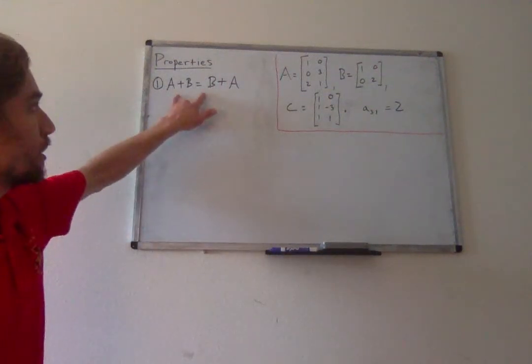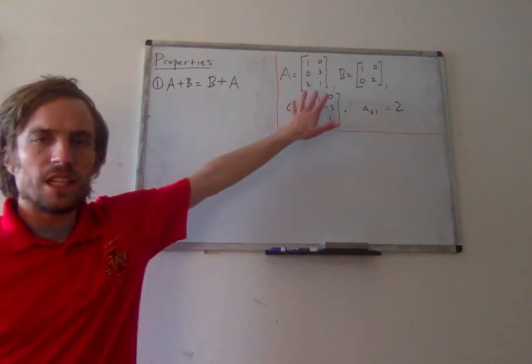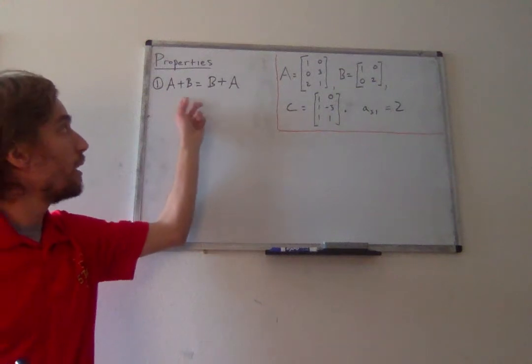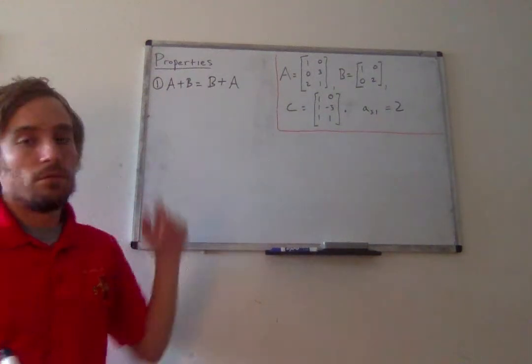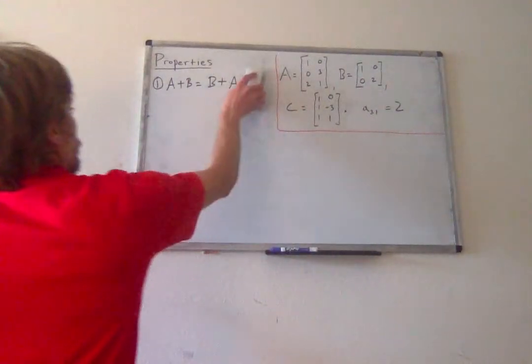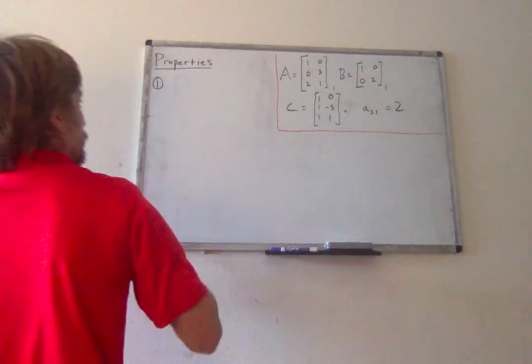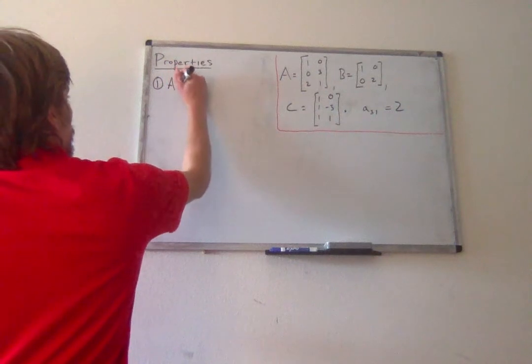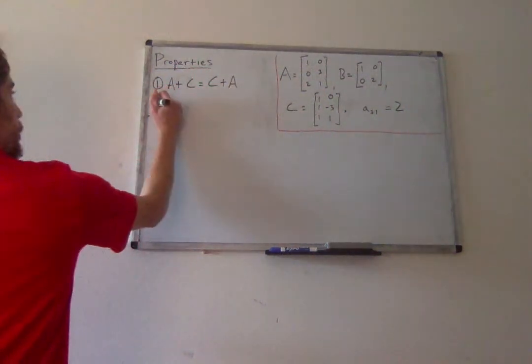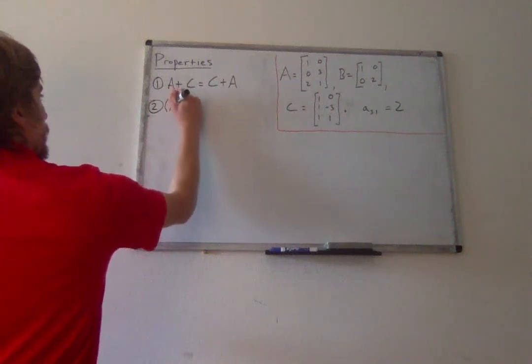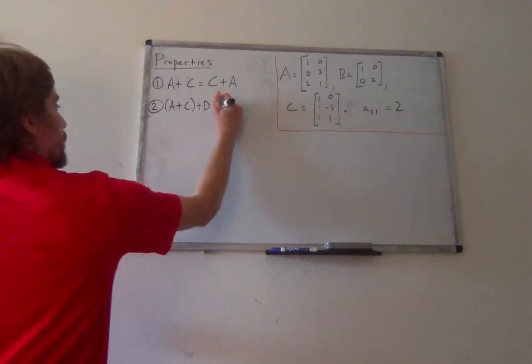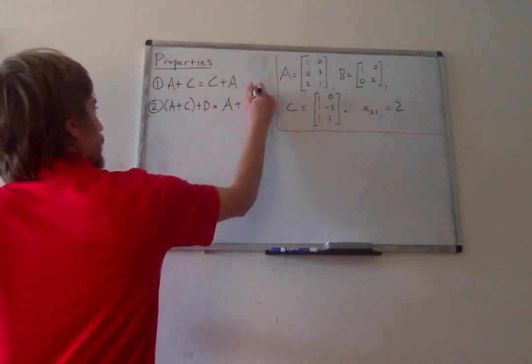So first things first. For now, ignore the example, because obviously A and B in this example can't be added together. But notice here, I can add matrices in any order I want. Actually, maybe to make this a little more clear, we'll say A plus C is equal to C plus A. So the order in which I add matrices doesn't matter. If I was adding three matrices, again, I could do this in any order.